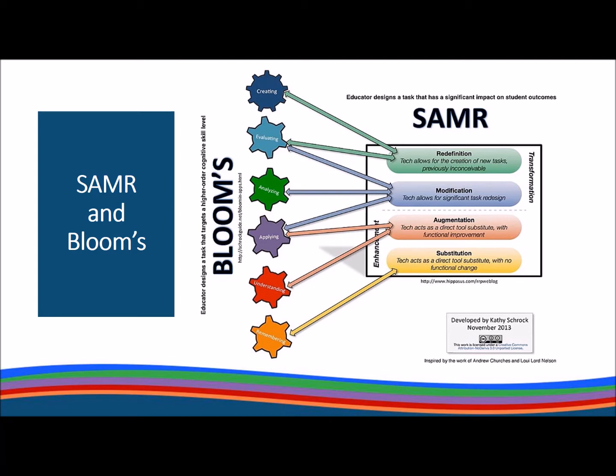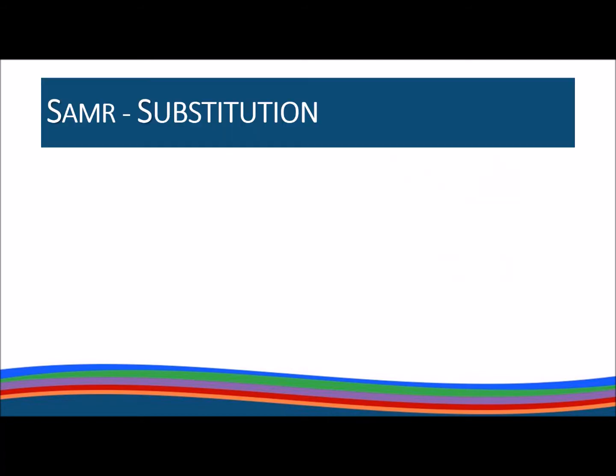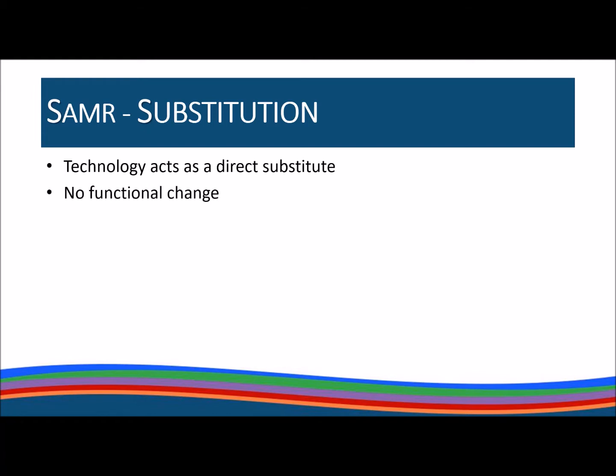But what does all of this look like in a classroom? When it comes to technology integration, the S in SAMR is for substitution. Technology acts as a direct substitute with no real functional change — we are basically making a digital copy of something we already did.